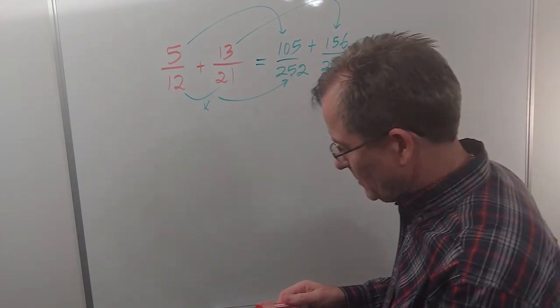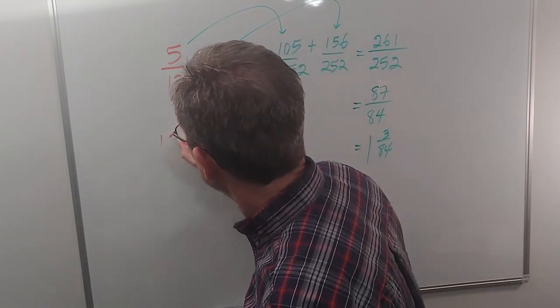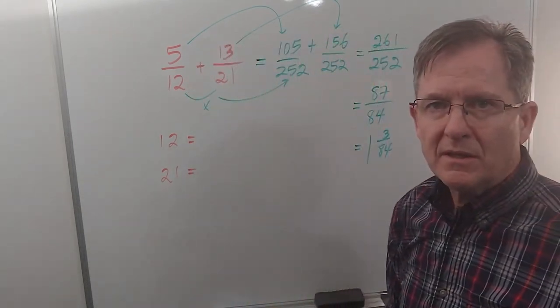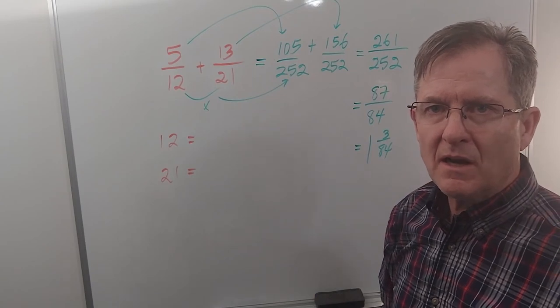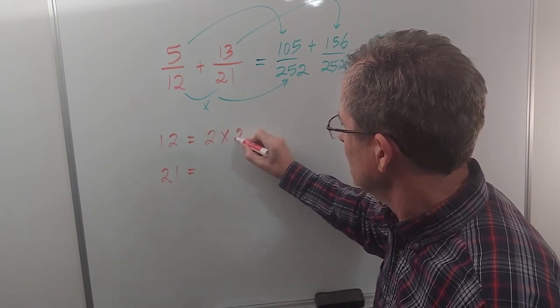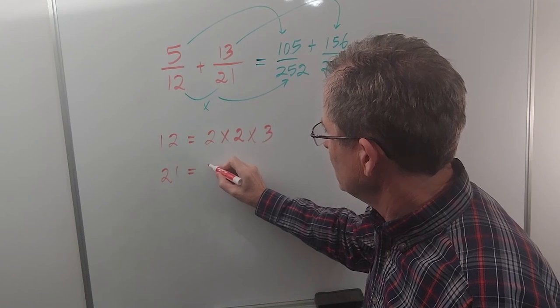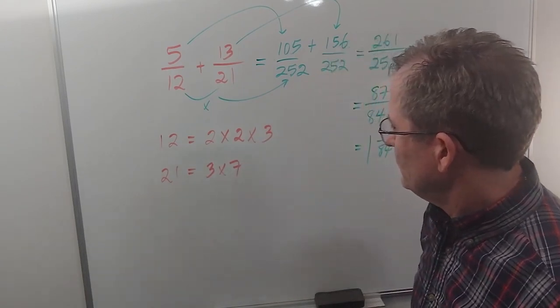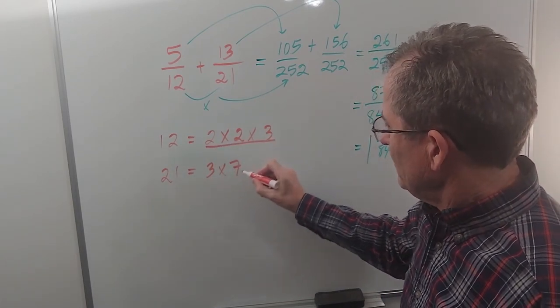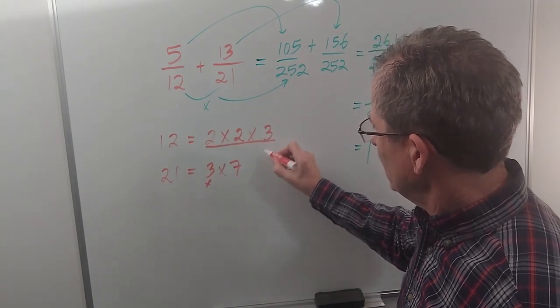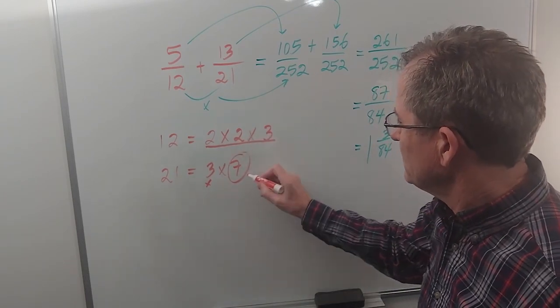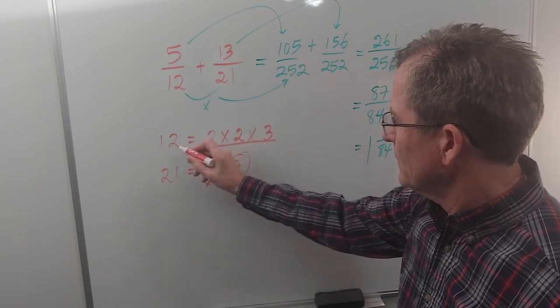Well, to figure that out, think about 12 and think about 21. Some people are just good at coming up with the lowest common denominator just by thinking about it, but let's break 12 down into its factors: 2 times 6, which is 2 times 2 times 3. And 21 is 3 times 7. So we need all of these numbers in our common denominator, but we don't need this extra 3 because we've already got a 3; we just need the extra 7. So the lowest common denominator will be 2 times 2 times 3 times 7. 2 times 2 times 3 is 12, of course, times 7 is 84.